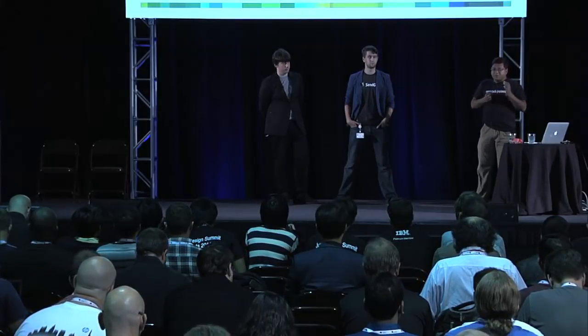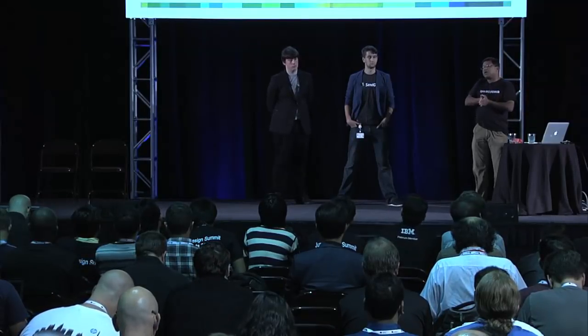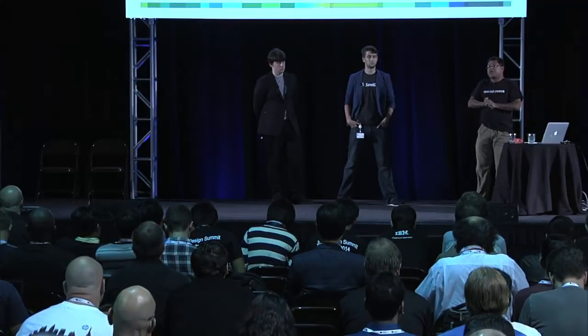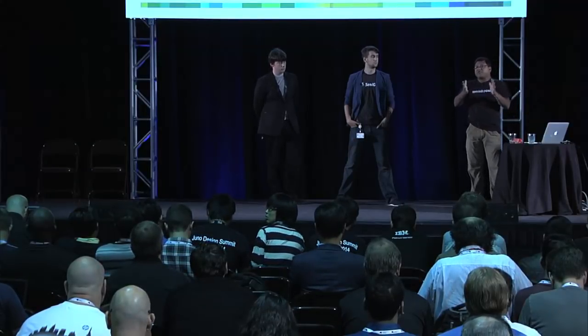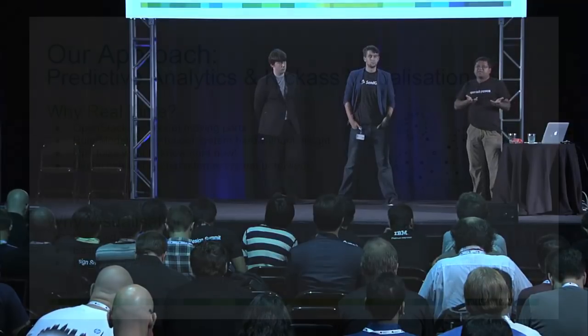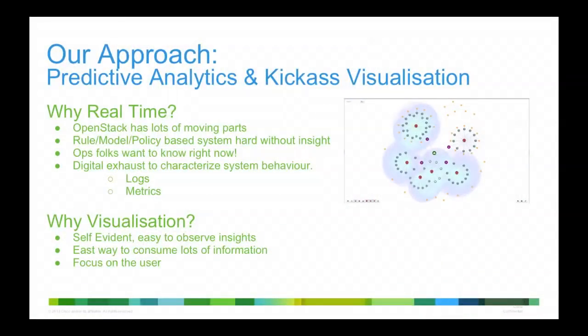If you look at any data center or OpenStack cloud, you'll see the amount of digital exhaust that is generated. If you can harness that, it's going to give you a lot more insight than what even human ops folks can do. While the human ops expert has domain expertise, he or she may not have visibility of all the events happening because there could be hundreds of thousands of events going on in a large data center. Digital exhaust in this talk means logs and metrics, but you could even use thermal imaging and all sorts of physical sensors to figure out what's going on.